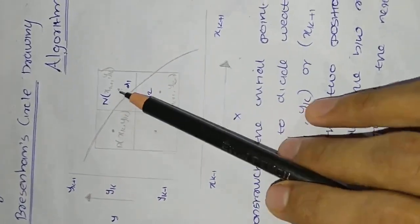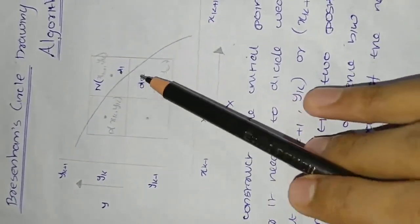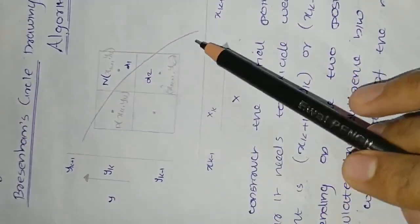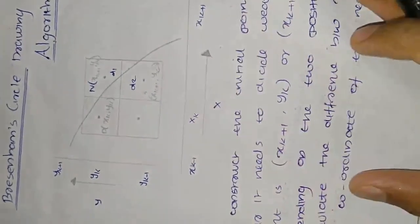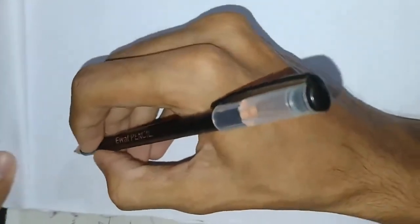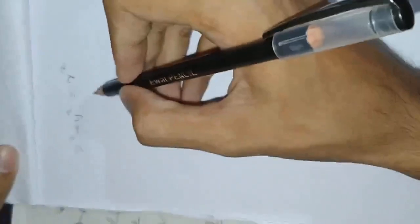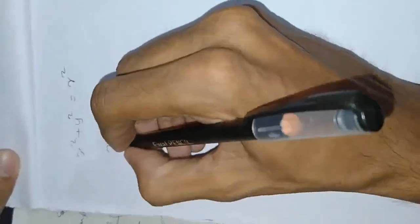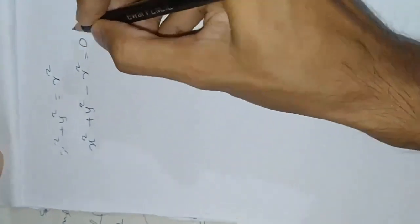We have two points: xk plus 1, yk and xk plus 1, yk minus 1. These two points are on the circle. The circle equation is xk plus yk is equal to rk. We will rearrange this equation: x square plus y square minus r square is equal to 0.